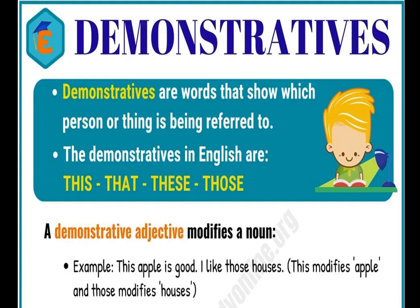The last topic is Demonstratives. These are words used to point out the noun — the person or thing to which they refer. The demonstrative words in English are: this, that, these, and those. Demonstrative adjectives modify a noun — this demonstrative adjective always modifies a noun.